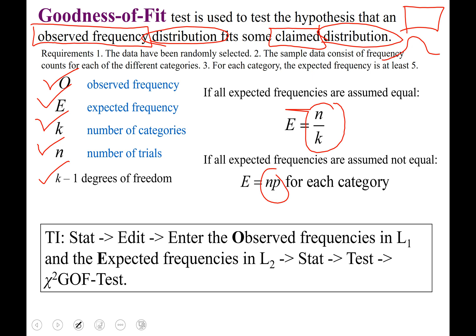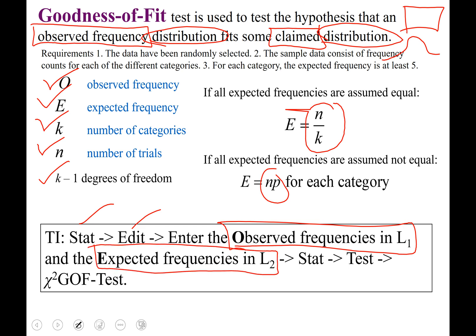If you take out your graphing calculator and go under STAT then EDIT, you'll enter the observed frequencies into list one and your expected frequencies into list two. Then go to your list of tests by going STAT, TEST, and select the chi-squared GOF test. GOF stands for goodness of fit — how well does what you observed actually fit the shape of what you expected to observe.